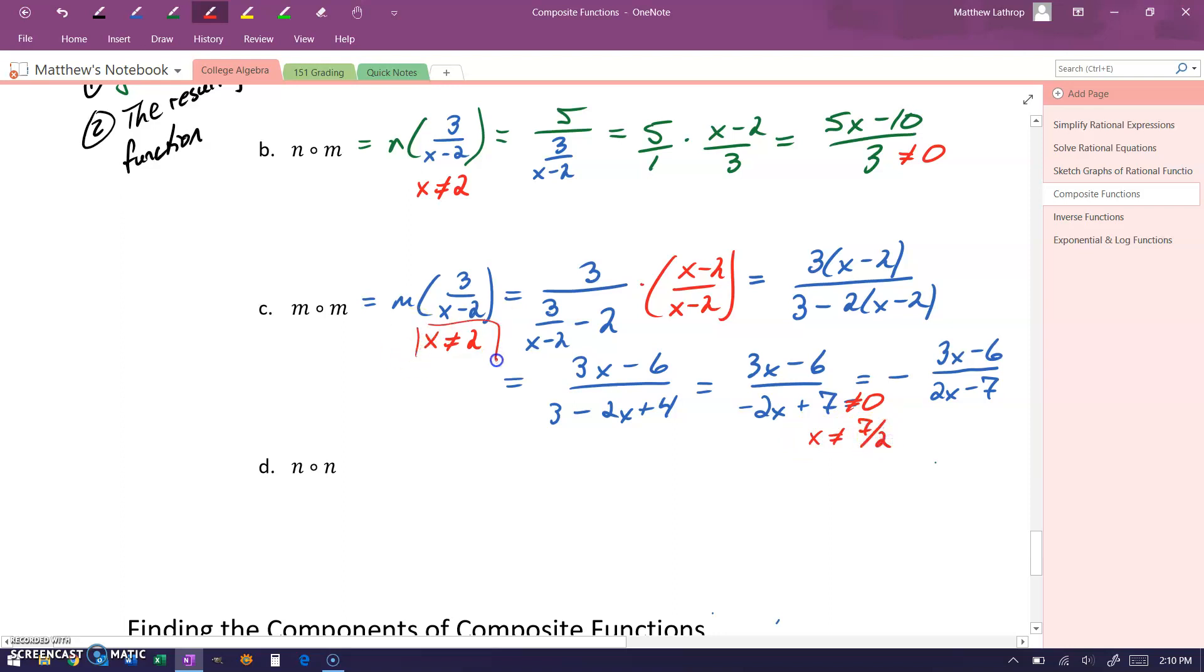So we get two restricted values. In this case, x cannot be equal to 2 or 7 halves.